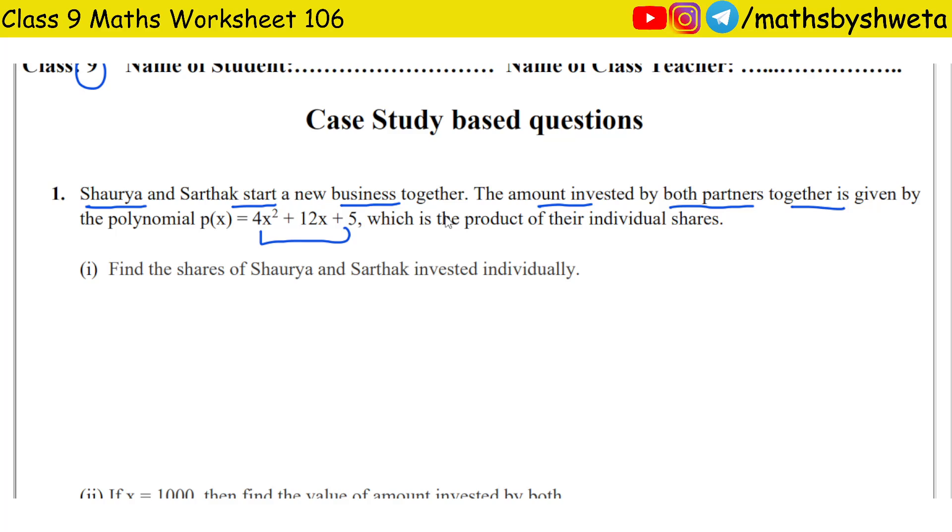This is the product of their individual shares. So if we factorize it, the individual shares will be revealed. So, middle term split. Plus and minus—12x should be split. When we multiply, we should get 20. So take 10 and 2.